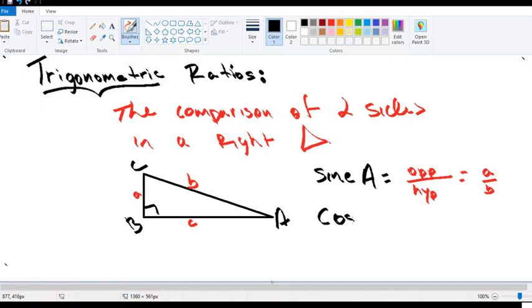The second ratio that we will look at is cosine. Cosine of A is adjacent over hypotenuse. Remember the word adjacent is basically next to. So lowercase c over hypotenuse b.